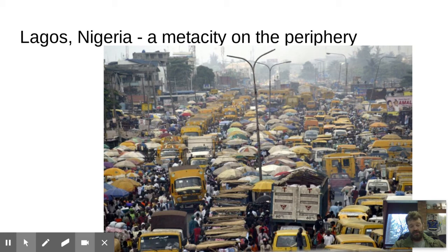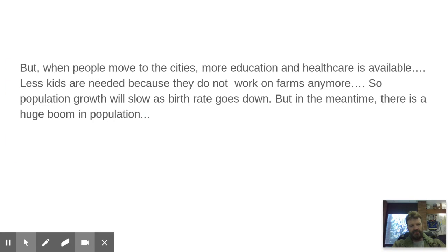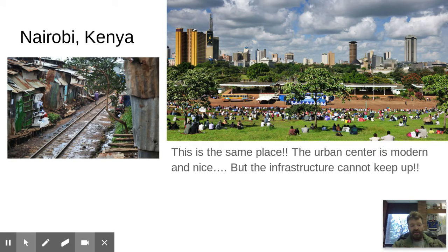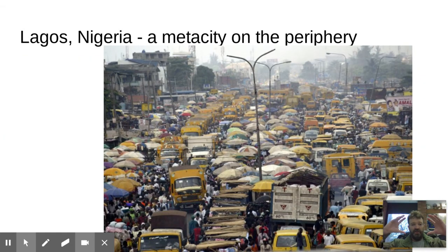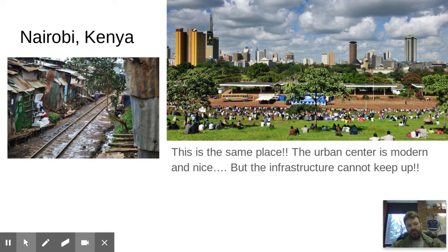They need more roads, and they are in the beginning of this process — over the course of 20 to 30 years it will settle down. Here's Nairobi, Kenya. The urban core — the central business district inside Lagos and Nairobi — looks pretty modern. But the picture underneath Nairobi shows a railway running through a housing area, with a guy walking along the railway — that's not developed at all. The same city has a modern urban center on the right. The infrastructure on the outside can't keep up because so many people are moving in, but eventually they'll catch up.